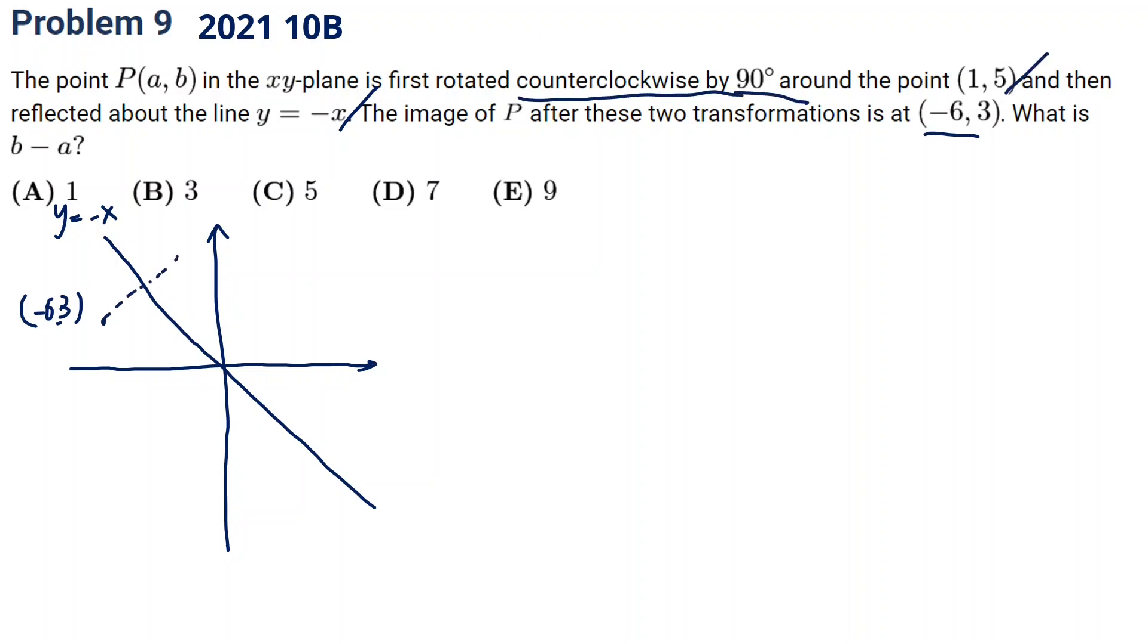So if we reflect back first, this point's gonna be negative 3 and 6 as you can see. And then it's rotated counterclockwise by 90 degrees about point (1, 5). So this is (1, 5), and this is rotated counterclockwise 90 degrees from here. So this point is (1, 5).